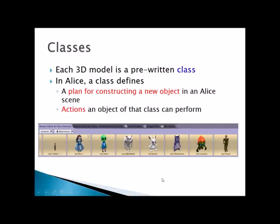Let's review what was discussed in the video. A class is a plan for constructing an object, and it contains the actions that an object can do. Just remember: a class is a plan for a new object, and it includes the actions — called methods — that object can perform.